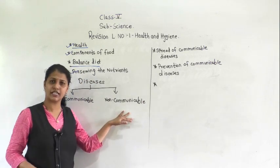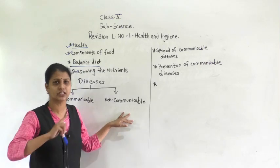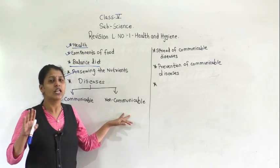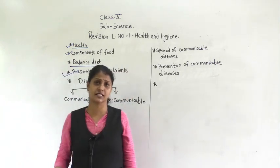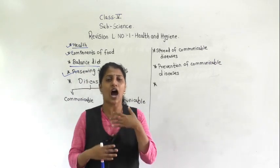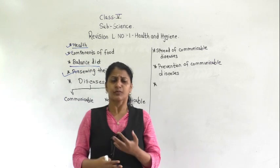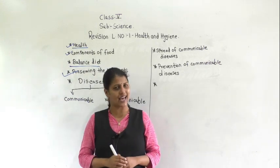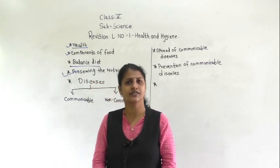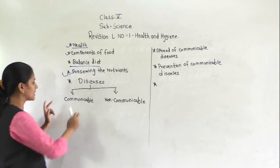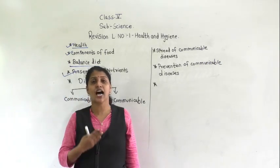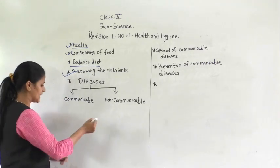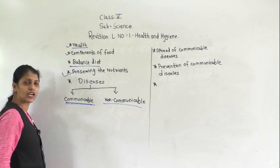Non-communicable diseases are diseases which do not spread from one person to another. Then we discussed different types of diseases such as marasmus, kwashiorkor, and rickets, and how we can prevent them by increasing certain food items in our diet — this is shown in a chart in your science book.